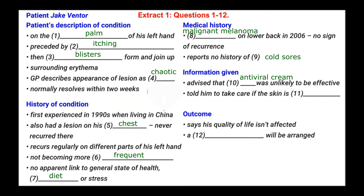Question number eleven is: told him to take care if the skin is blank. It's something to do with the state of his skin — it could be dry, wet, hot, cold, or similar. The patient asks about covering the sore to prevent infection, and the doctor says he doesn't need to cover it unless there's broken skin. So the answer to number eleven is: broken.